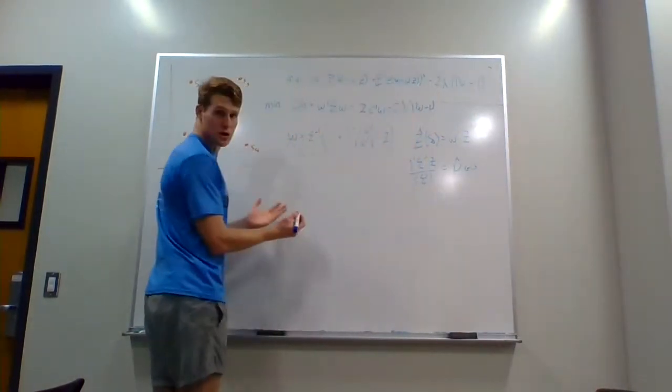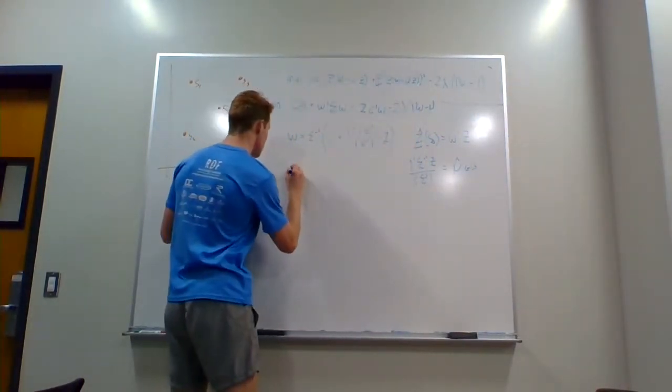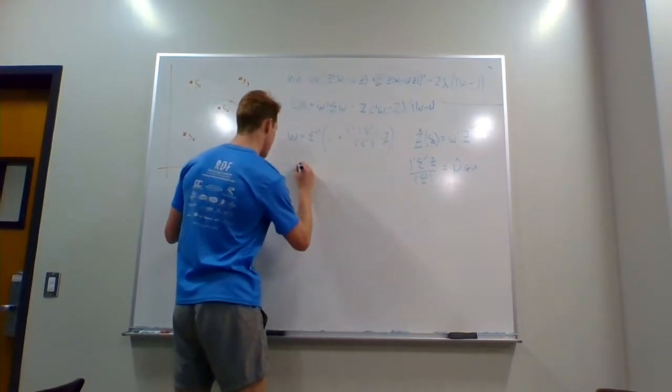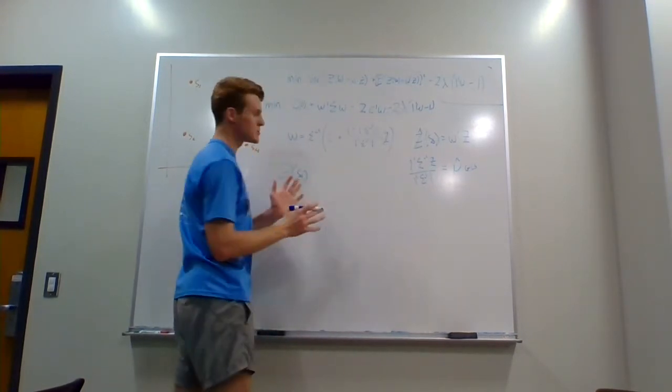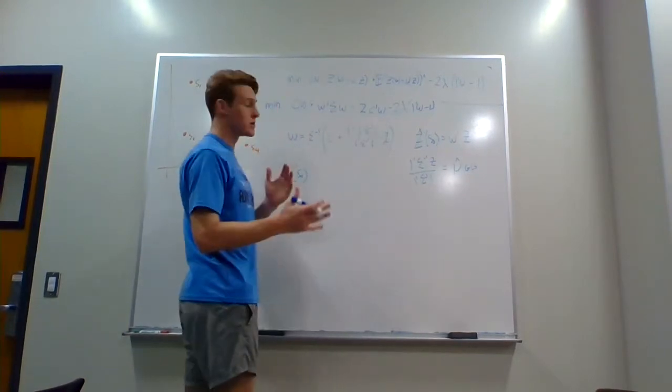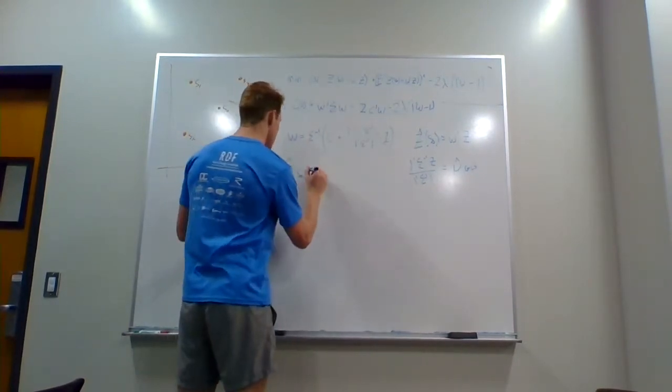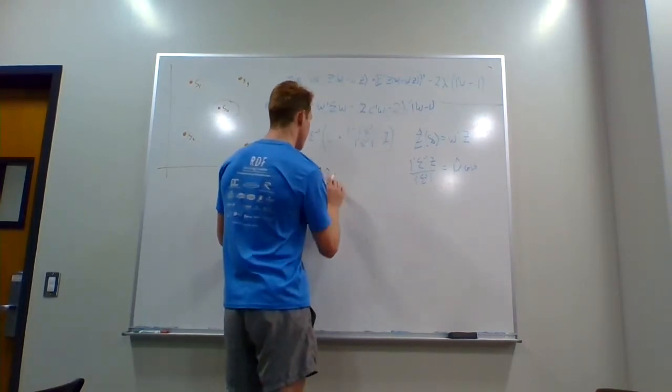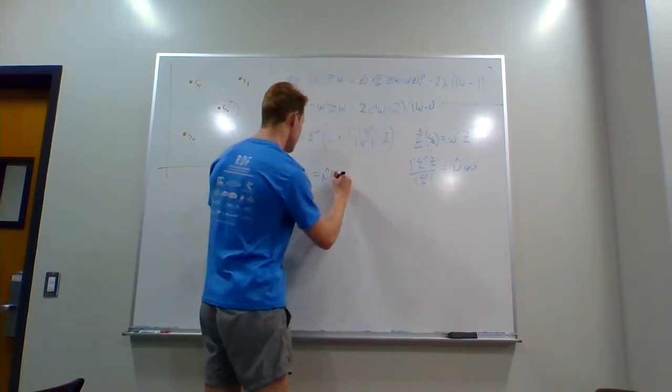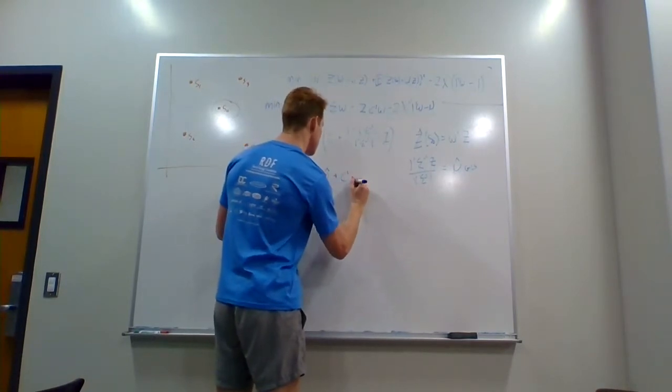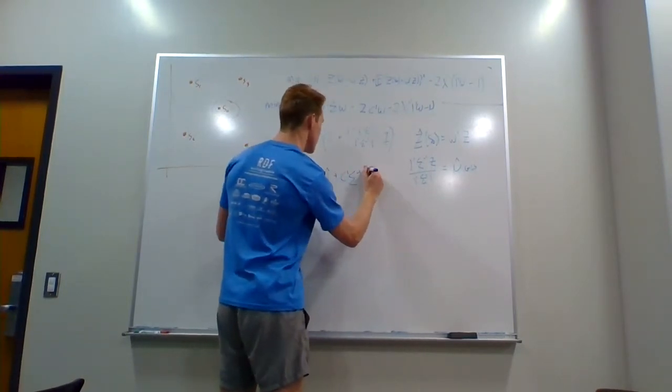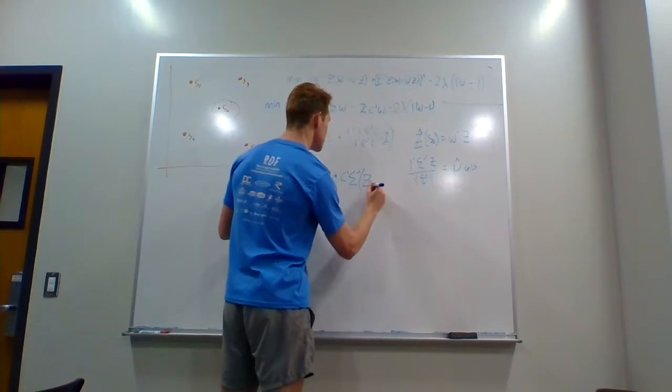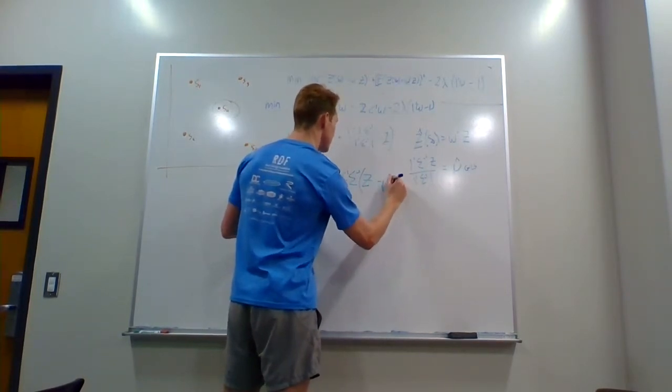So using these three definitions, we can come up with a final estimate for Z-hat of S-zero. And what that's going to look like when it's all simplified. Again, nothing too complicated with the math. It's just for the sake of time, we're going to skip a few steps. This is going to equal mu-hat, that same definition we have over here, plus C-transposed sigma-inverse times Z minus mu-hat.